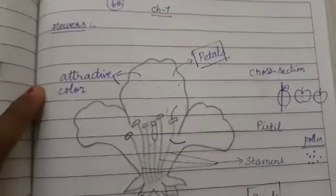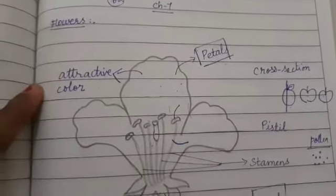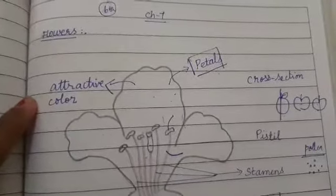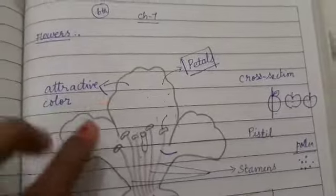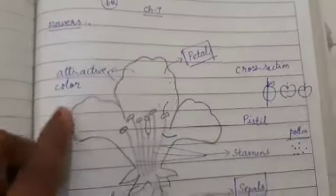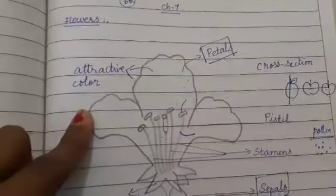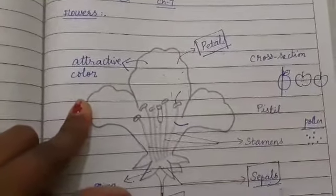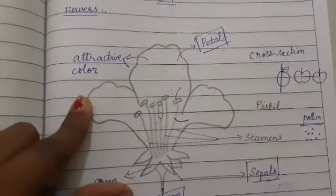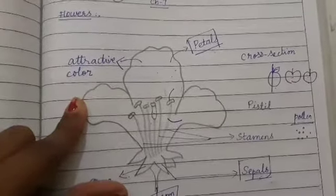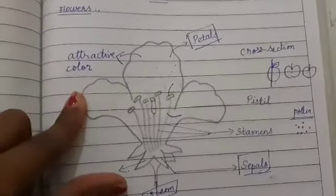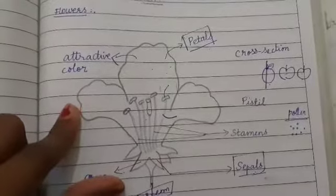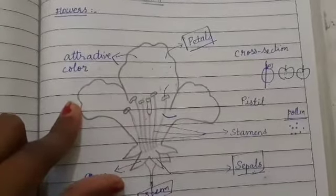Good morning children. Today we are going to have the diagram practice session of chapter 7. When I gave the diagrams as homework, a few children have not drawn the correct shape. So I felt I should teach you today.